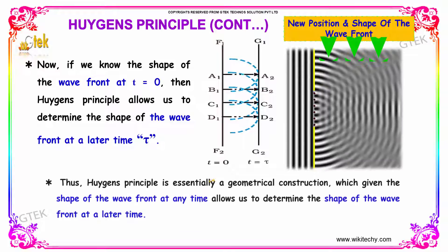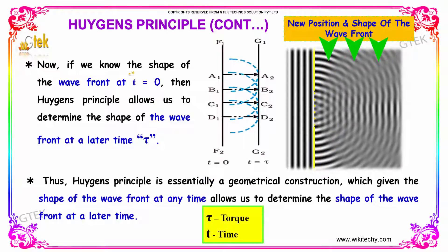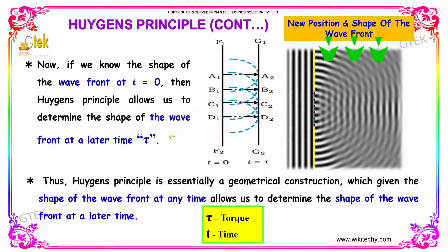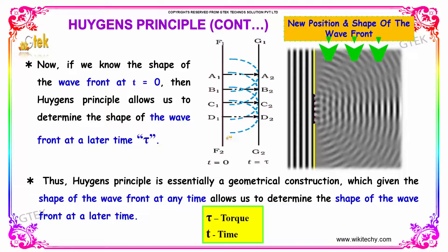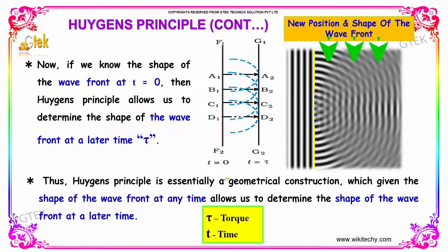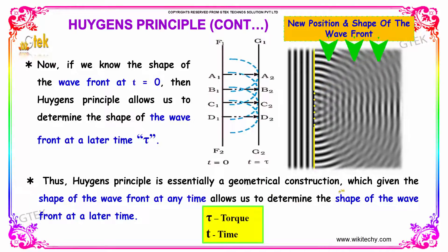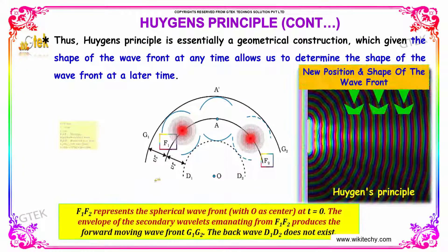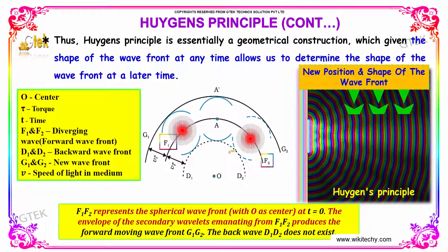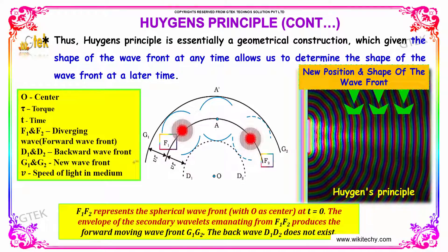If we know the shape of the wavefront at time t equal to 0, then Huygens' Principle allows us to determine the shape of the wavefront at a later time, indicated as tau. Huygens' Principle is essentially a geometrical construction which, given the shape of the wavefront at one time, allows us to determine the shape of the wavefront at a later time.